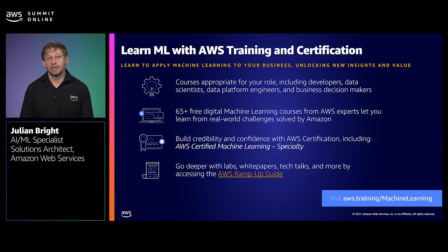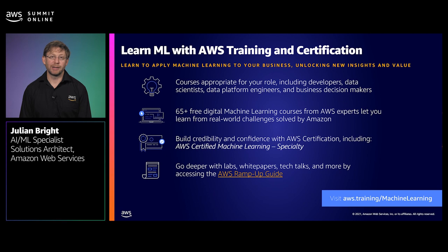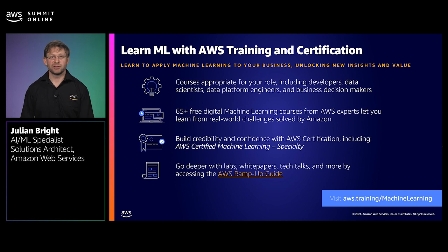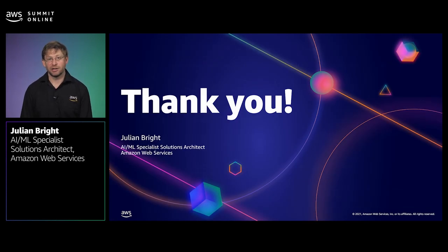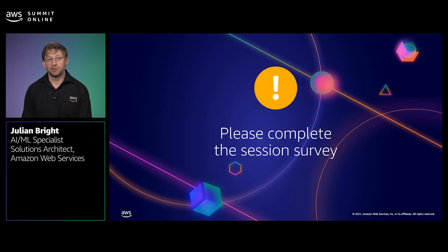You joined the AWS Summit to learn, and you can keep learning by going through Summit resources from AWS Training and Certification. We offer over 65 courses, many available free and on demand, as well as virtual instructor-led training. AWS experts will help you or your team learn to apply ML to your business, unlocking new insights and value. When you're ready, prepare for the AWS Certified Machine Learning Specialty Exam, which validates your skills and provides an industry-recognized credential. For more information, visit aws.training.com/machinelearning and be sure to check out the AWS Ramp Up Guide to learn more. Thank you so much for taking the time today to learn about A-B testing for machine learning models with Amazon SageMaker. I hope this has given you some practical next steps you can take away and apply to your own machine learning models. And if you enjoyed this video, don't forget to give some feedback.